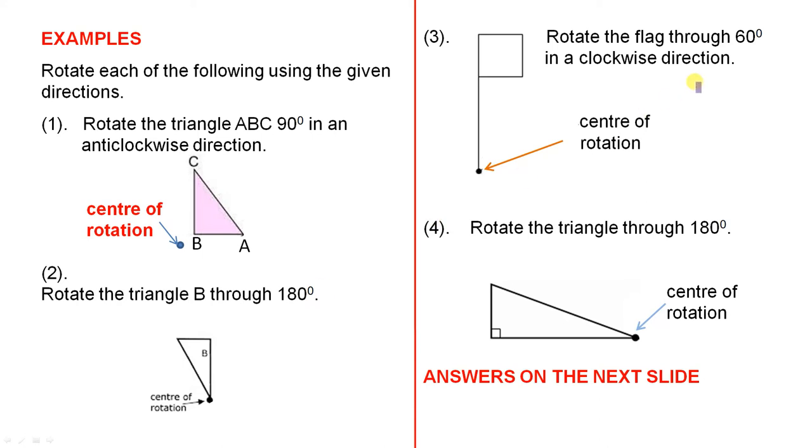Number three, rotate the flag through 60 degrees in a clockwise direction. There's the centre of rotation, right at the end. And the last one, rotate the triangle through 180 degrees. There's the centre of rotation, right at the end of the triangle, and we have the answers on the next slide. So we'll leave this slide on for 30 seconds, and then we'll quickly go to the answers, and then we'll finish up.